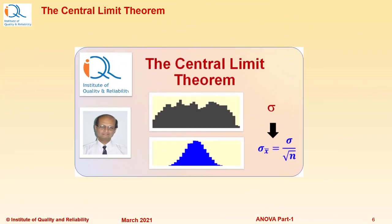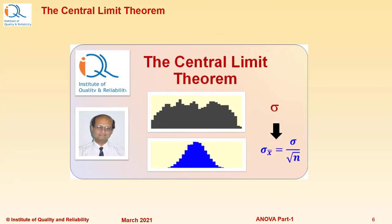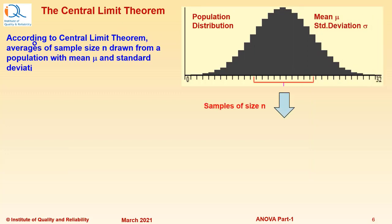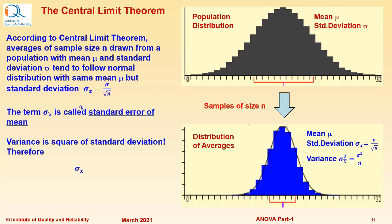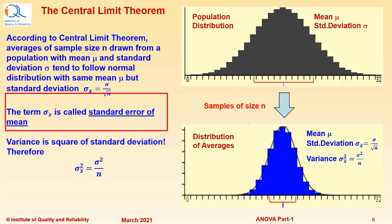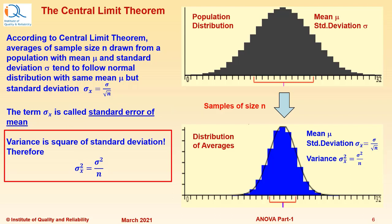As we try to understand the procedure for analysis of variance, we need to recall the concepts of Central Limit Theorem. A complete video on Central Limit Theorem is available in our YouTube channel. According to Central Limit Theorem, averages of sample size n drawn from a population with mean mu and standard deviation sigma tend to follow normal distribution with the same mean mu, but standard deviation sigma-x-bar equal to sigma divided by the square root of the sample size n. The term sigma-x-bar is called the standard error of mean.